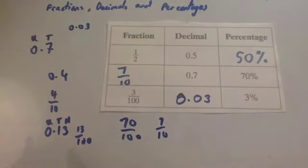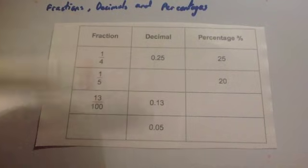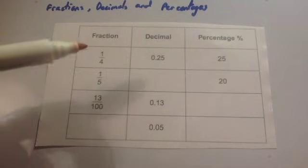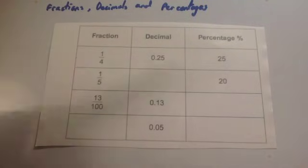Okay, let's look at another question. So again, we've got a column of fractions, decimals, and percentages, and we've been asked to fill in the gaps. And it's actually done the quarter row for you, so you've got a quarter, 0.25, and 25%.